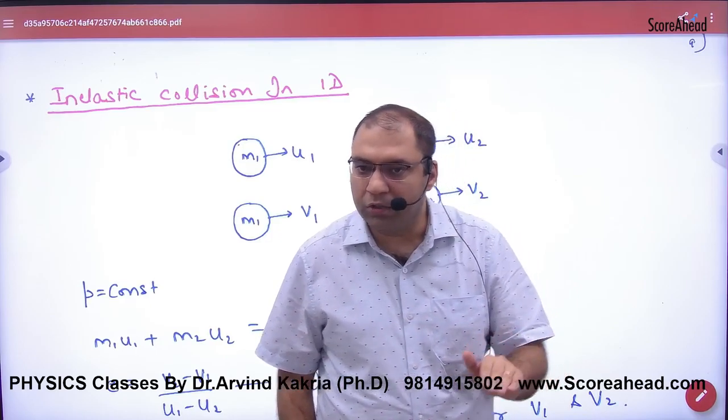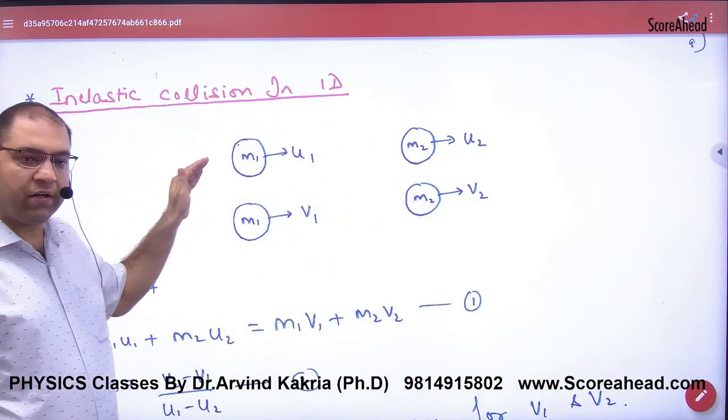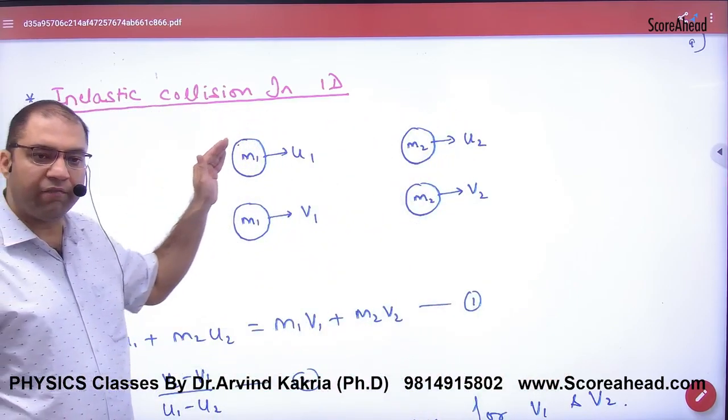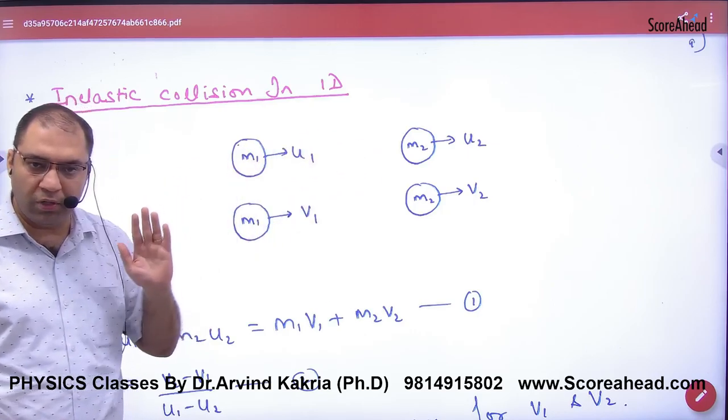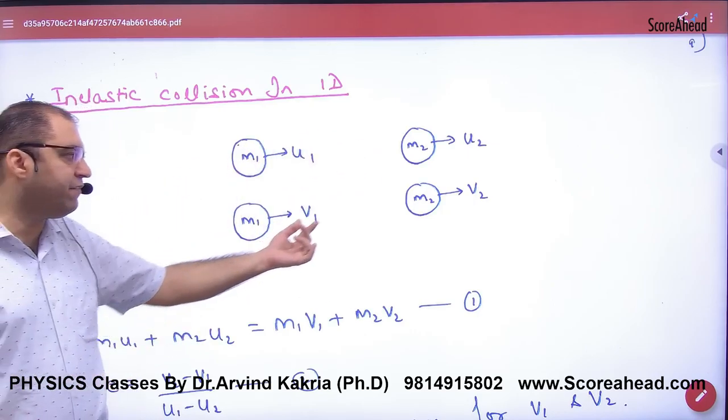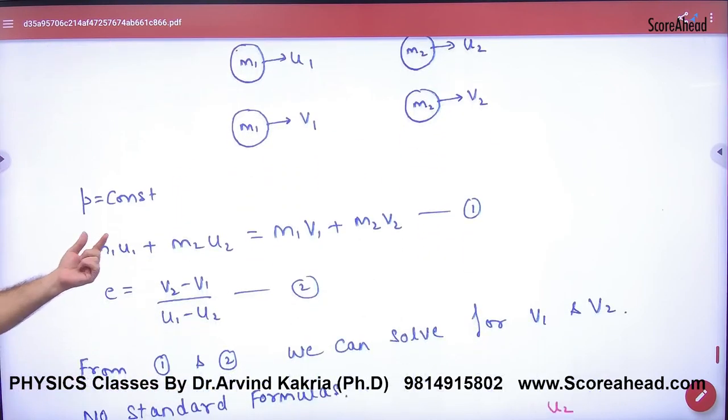So in inelastic collision, suppose M1 with U1, M2 with U2, after collision V1 and V2. The momentum is constant. Before collision, momentum is M1*U1 plus M2*U2. After collision, momentum is M1*V1 plus M2*V2. This is equation number 1.